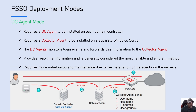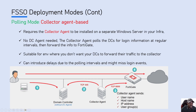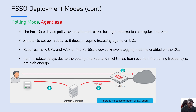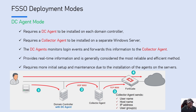For FSSO deployment modes, we have three options. The first is the DC agent mode, then we have the polling mode with collector agent-based, and the third mode is the polling mode agentless.